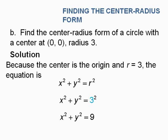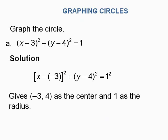Another example: find the center radius form of a circle with center (0, 0) and a radius of 3. Label the center h and k, the radius r as 3. Writing the formula out — x minus h quantity squared plus y minus k quantity squared equals r squared — and plugging in 0 for h and k, then 3 for r, gives the final equation x squared plus y squared equals 9.